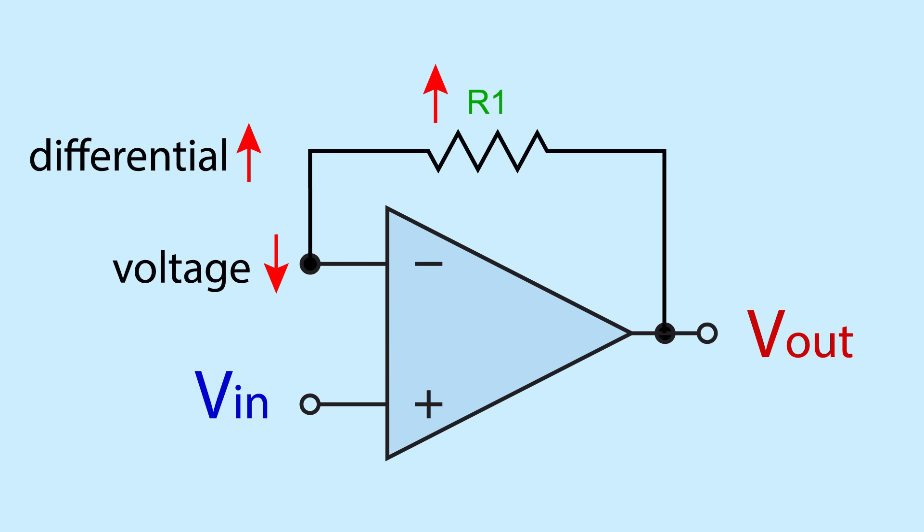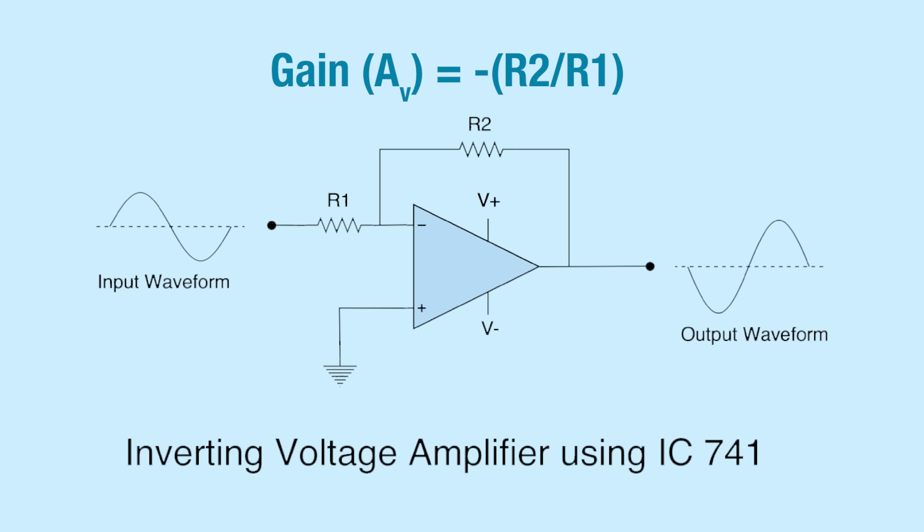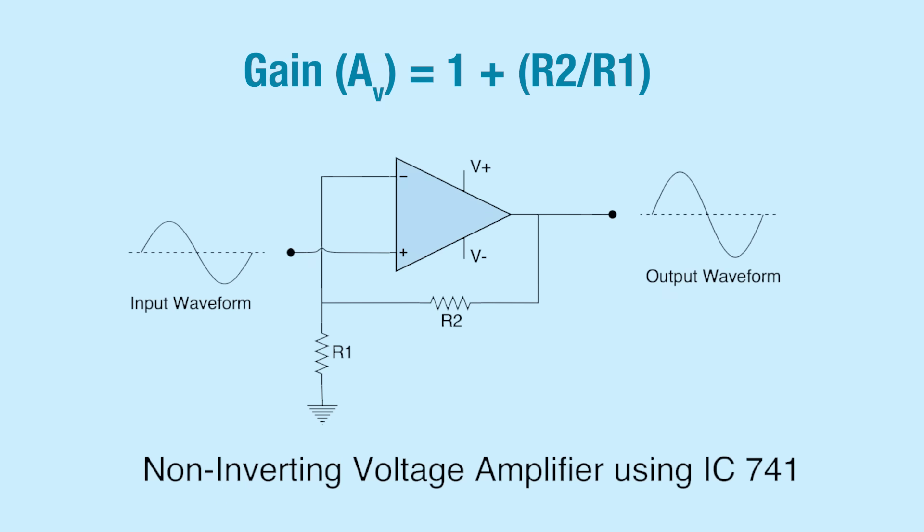But we want control of the gain, so we introduce a feedback resistor to the loop. Changing the value of the feedback resistor changes how much of the output voltage gets fed back to the input, effectively controlling the amount of amplification between the input and output. If the active signal is connected to the inverting input, the signal is amplified, but the polarity of the signal is reversed. Up becomes down, and down becomes up. But if the active signal is connected to the non-inverting input, the signal is amplified, but maintains polarity.